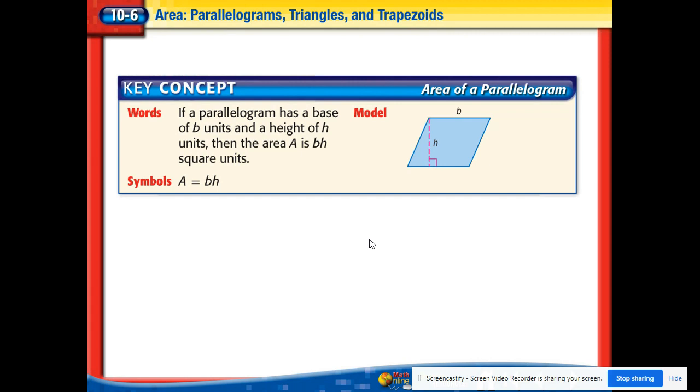Parallelograms are probably the easiest because all we're doing is multiplying base times height. Now base here is either the top or the bottom usually, and the height is the distance between those two bases. Now in a parallelogram those two bases should be exactly the same. So if the top is 10, the bottom should be 10 also. And the height is the distance between those two.